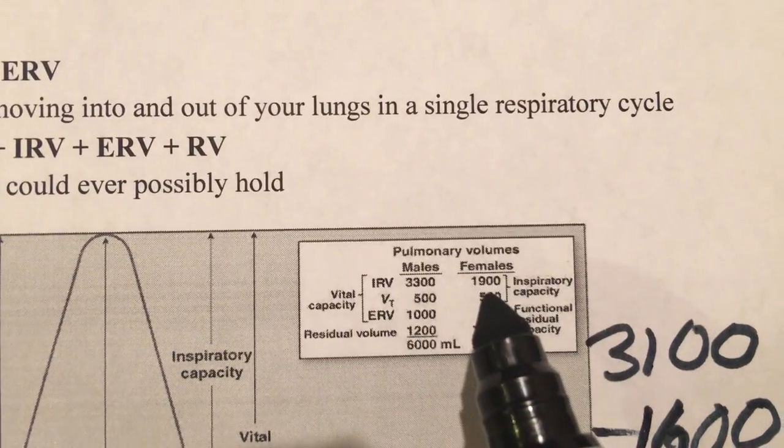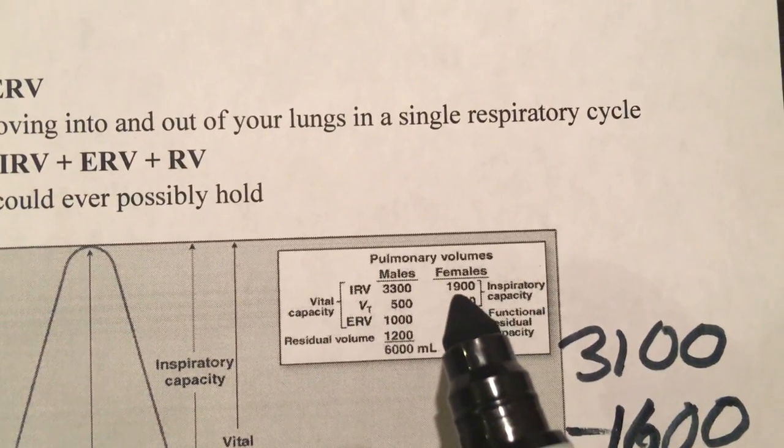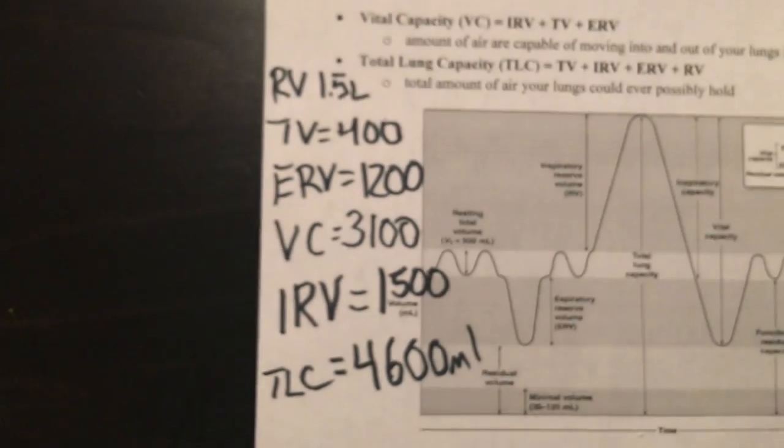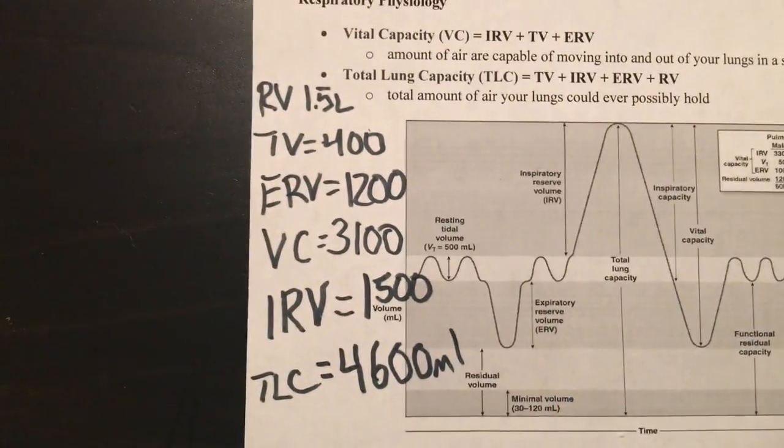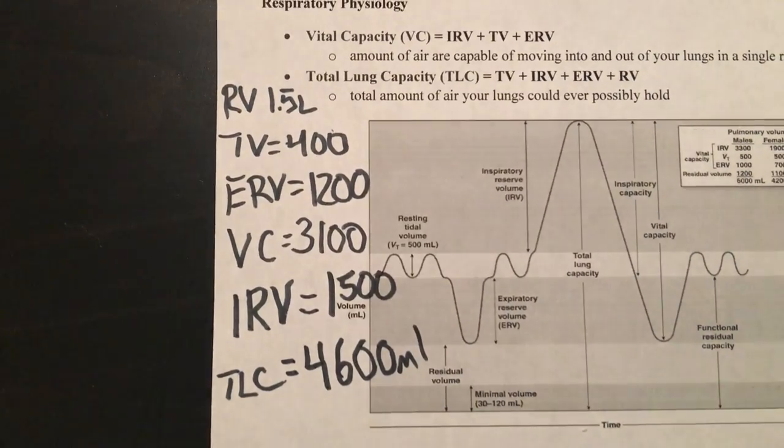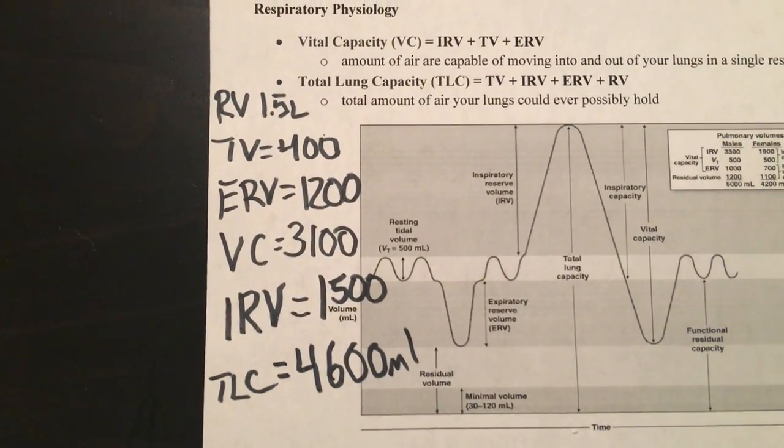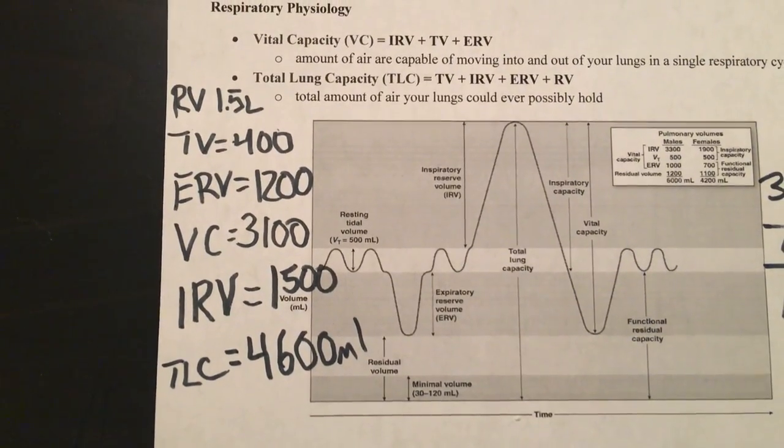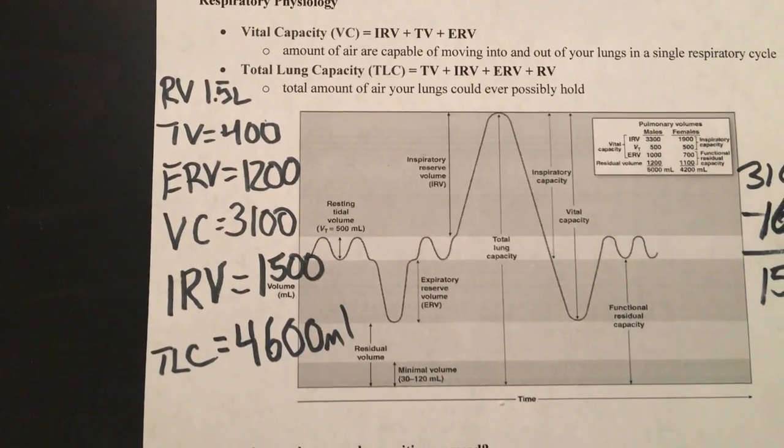If I compare that to the average IRV for females, 1900, okay, so a little bit low but still good. All right, so that is how you use your spirometer to assess various volumes and capacities, and I expect you guys to be able to describe that process on the exam.